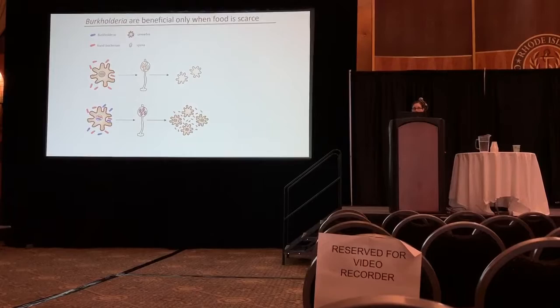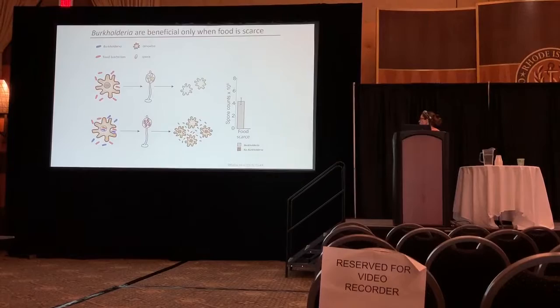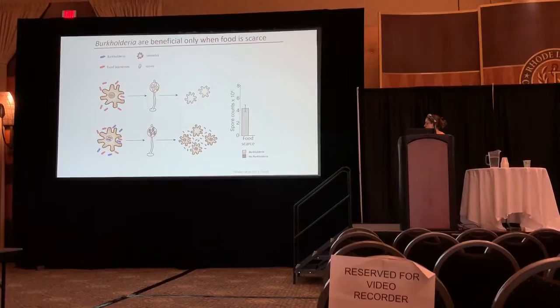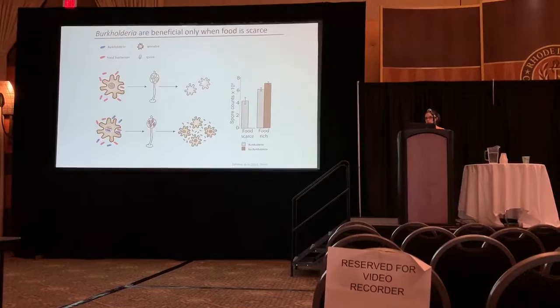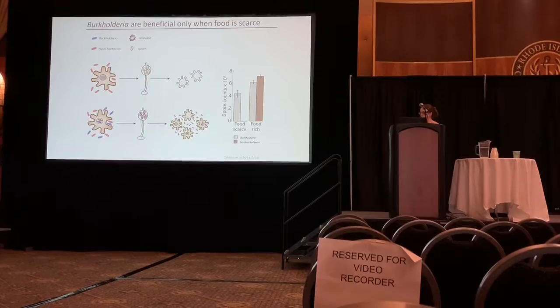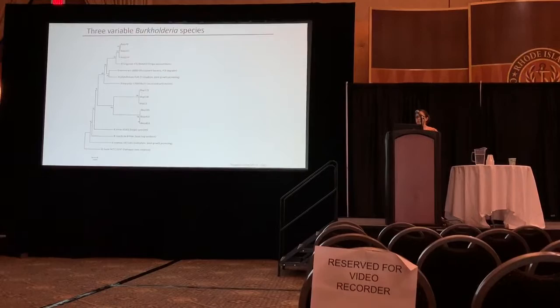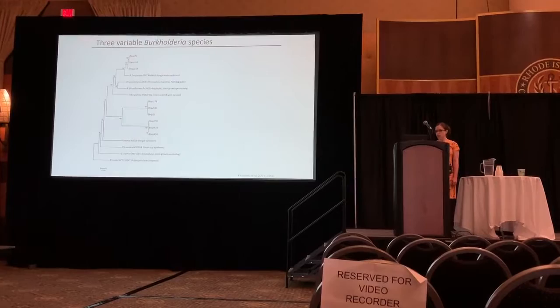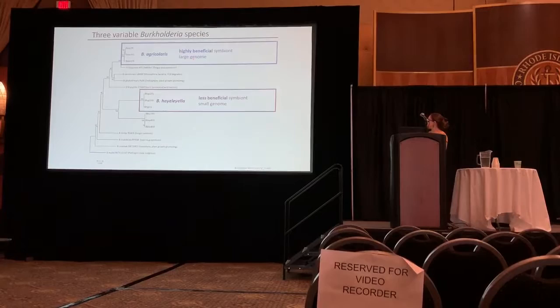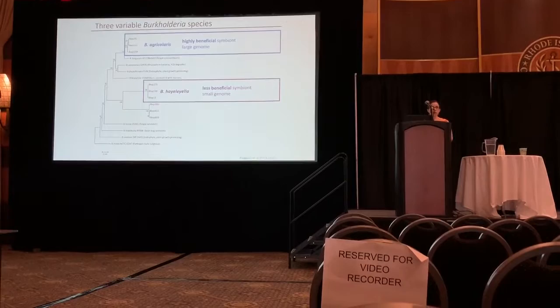The data shows that in food-scarce environments with Burkholderia the amoebas do alright, but without it they're basically dead. However, if the amoebas land in a food-rich environment after dispersal, Burkholderia is actually costly — they do better without it when there's more food around, with a depression in fitness when Burkholderia is present. There's also a lot of variation: we know we have three species with a lot of strain variation. One species tends to be really beneficial — giving a good benefit when food is scarce and not being that costly when food is available.